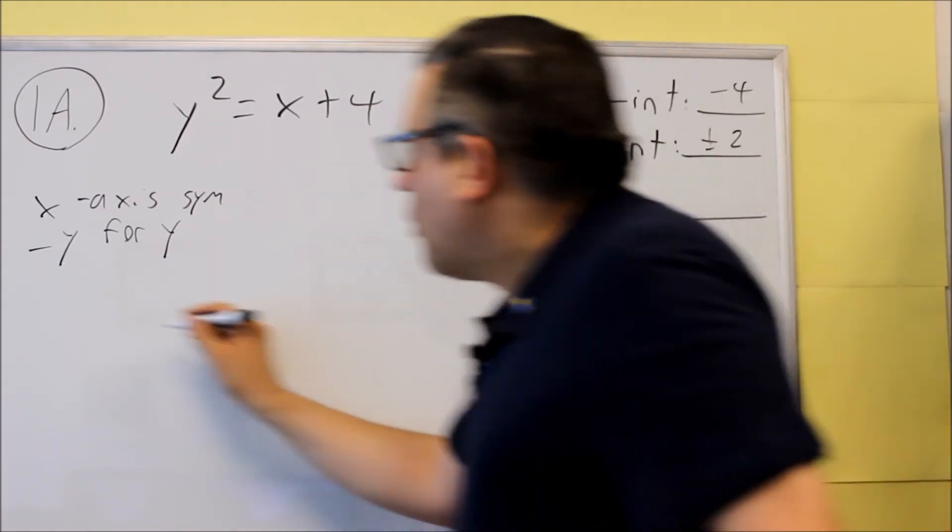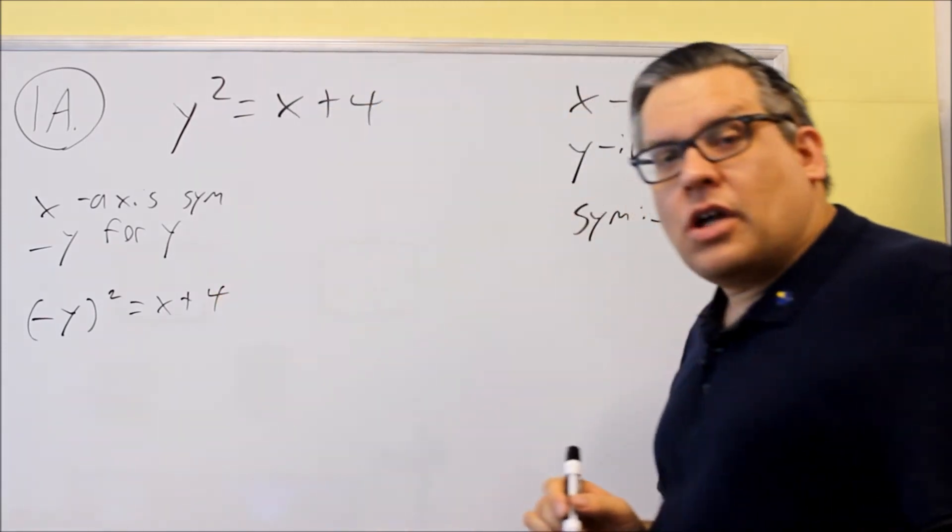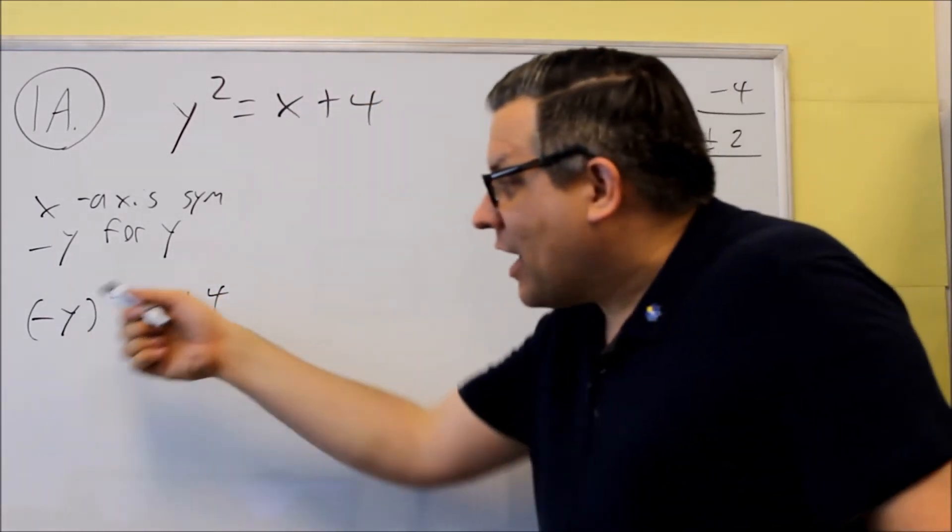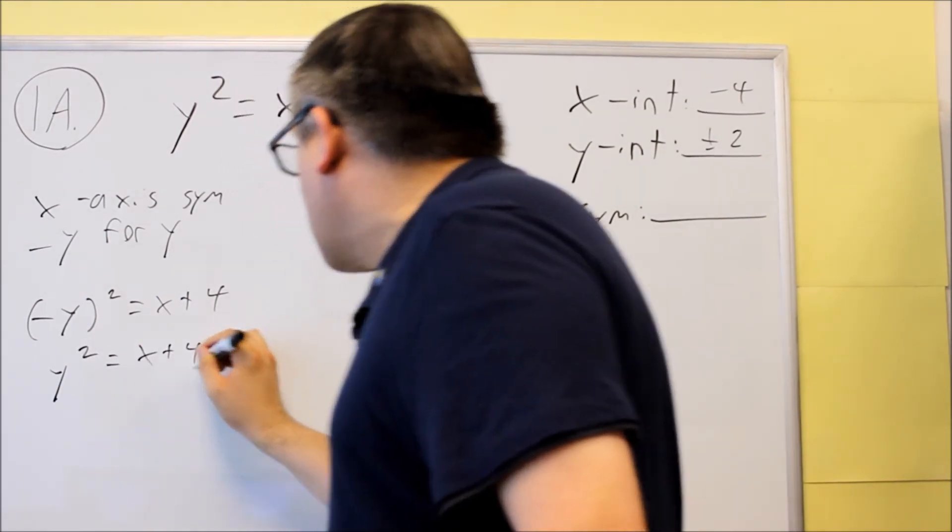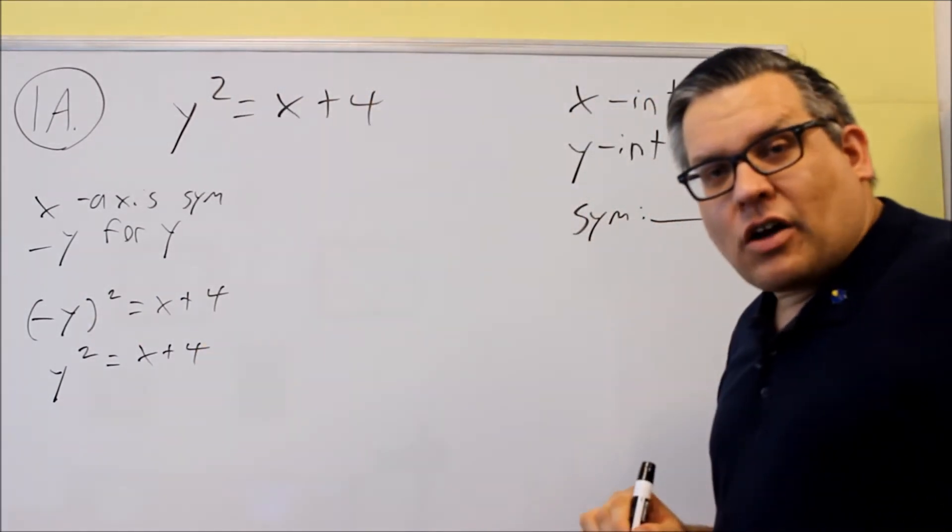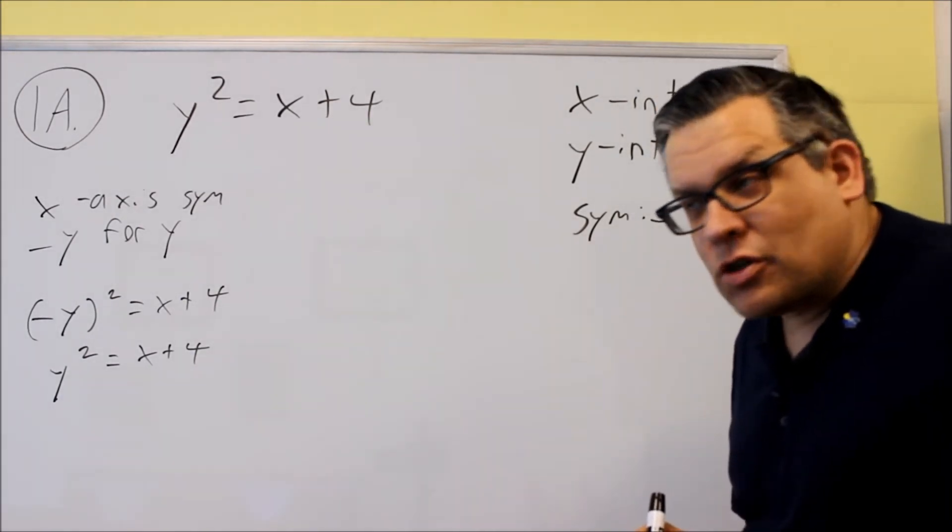Okay, so for this negative y for y, we're going to put a negative y in the original one and then you're going to simplify it. Any negative raised to an even power is going to become positive. So this one, I do get exactly the same thing I started with. So I know for sure it's going to have x-axis symmetry. So this one here would be yes, it does have that kind of symmetry.